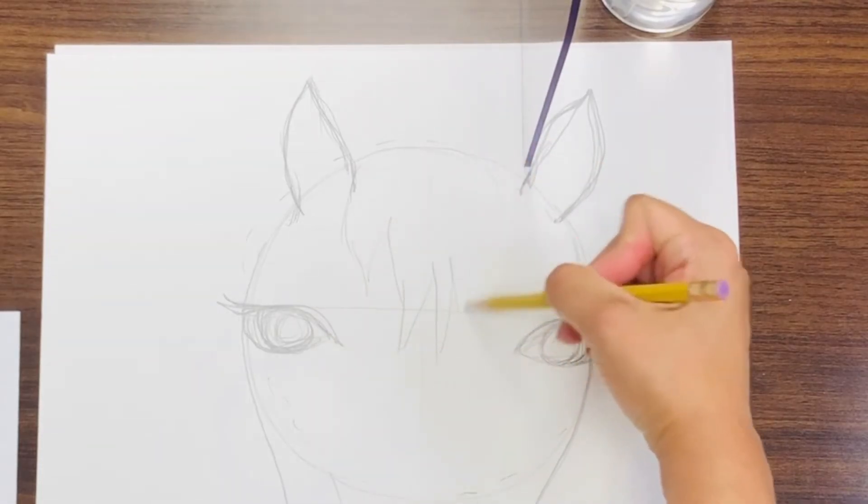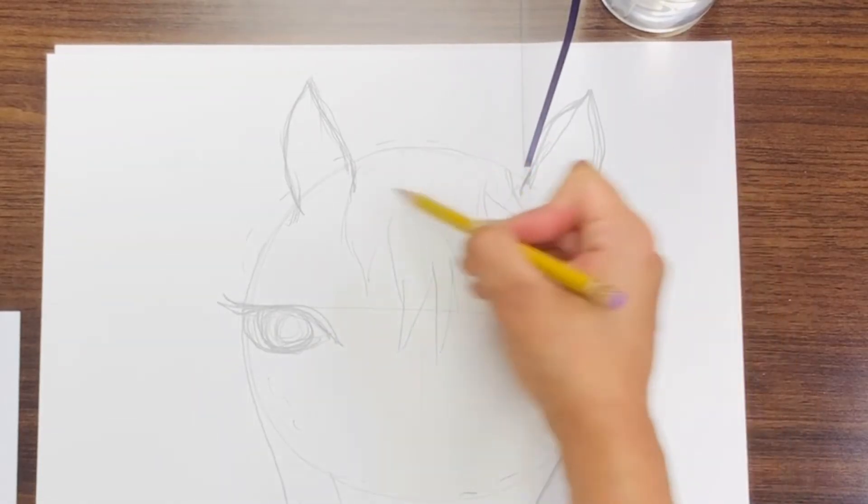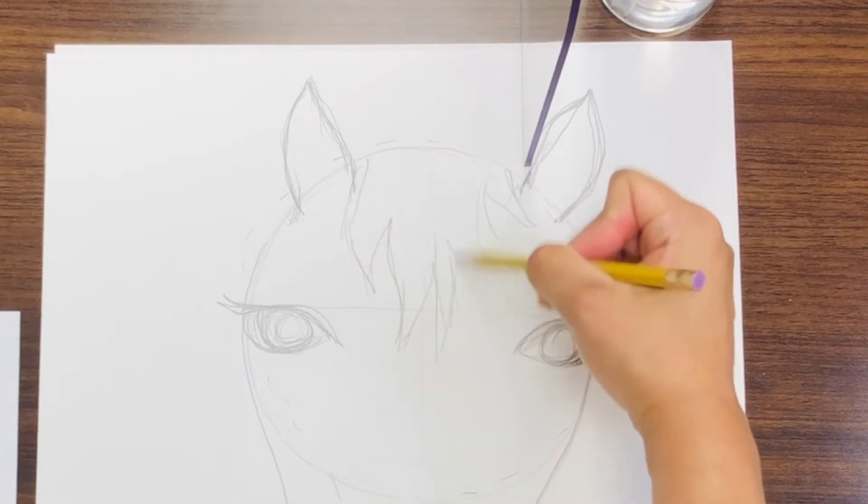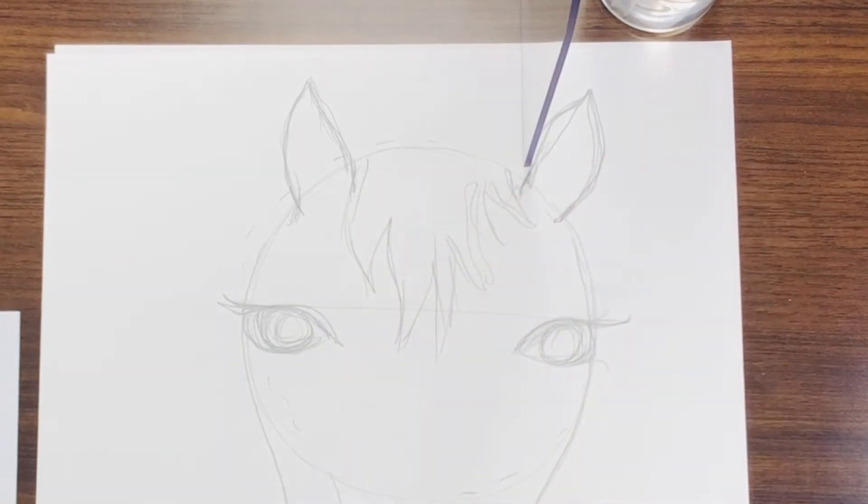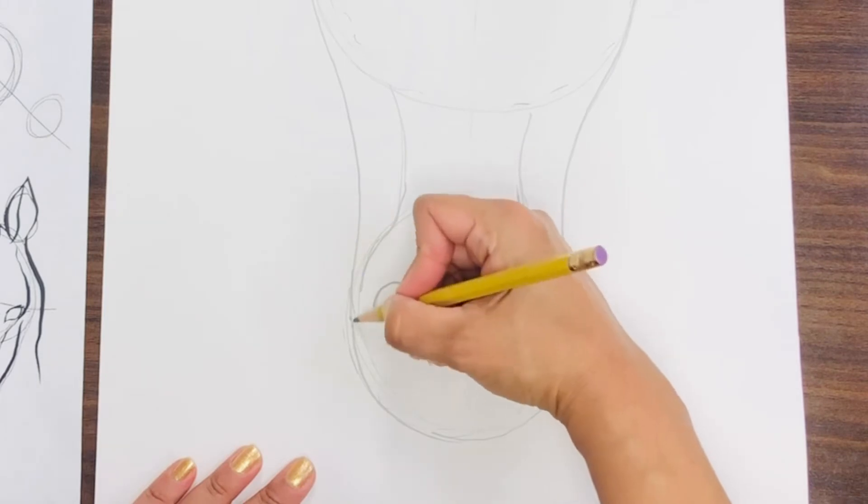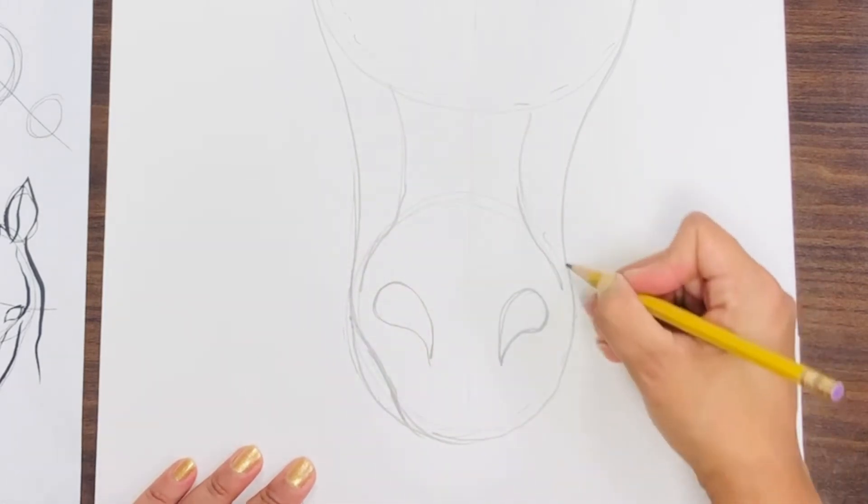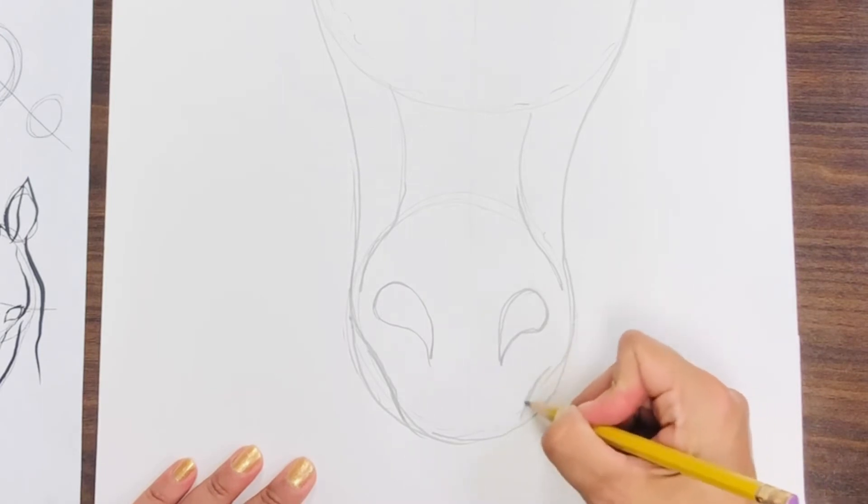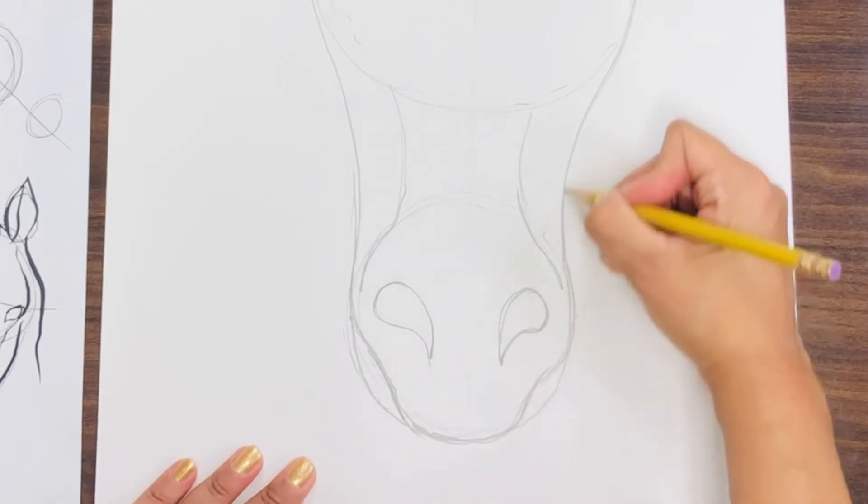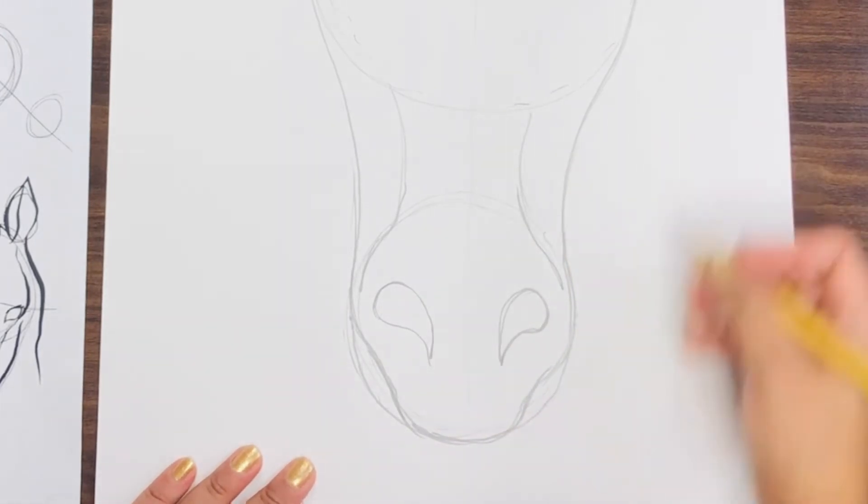Then in the middle, you can make part of the mane, part of the hair that hangs on the front of the horse. Then go ahead and start the outlining of the muscle, which is the nose area. You can define it a little bit more if you'd like to.